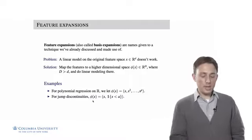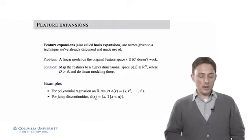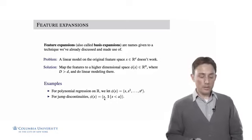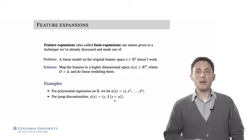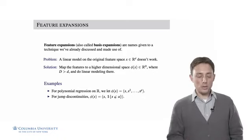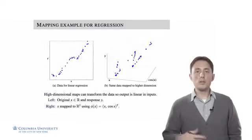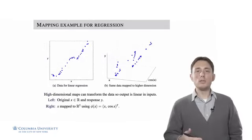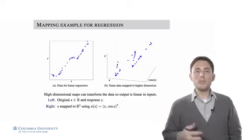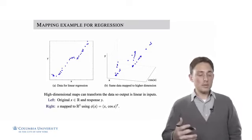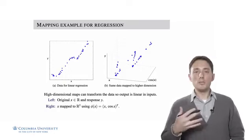Another example would be to take our one-dimensional value for x and map it to R^2, where the first dimension is x and the second dimension might be an indicator of x being less than some number a. Imagine we know that there's some sort of a jump discontinuity that occurs at a — the second dimension would then take care of that with a linear model. So the motivation is that even though things don't look linear in the original space, in this higher dimensional space that we map to, things do suddenly start to look linear and a linear model can become useful.